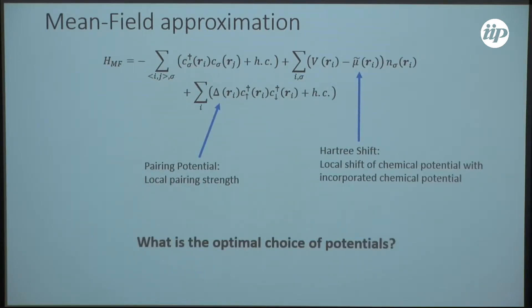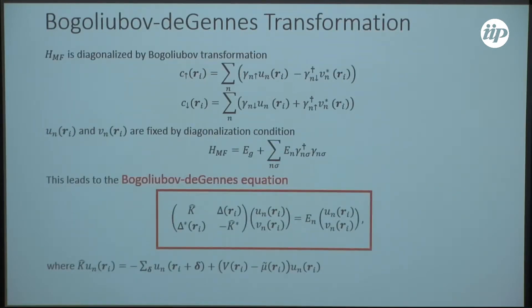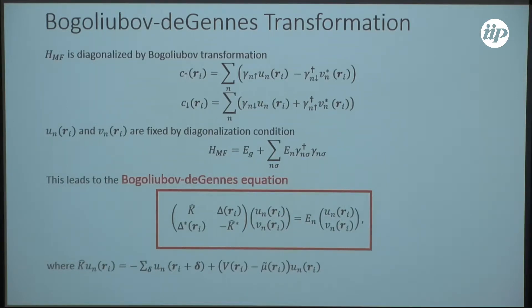Now, the question is how do we determine our potentials? For this, we first want to diagonalize our Hamiltonian for a given delta and µ-tilde. This can be done by the Bogoliubov-de Gennes transformation. We change to Bogoliubov operators, which are the superposition of electron and hole operators — so we need to determine the coefficients, the particle and hole wave functions. Demanding that we diagonalize our Hamiltonian, we arrive at the Bogoliubov-de Gennes equations. Here we have doubled our degrees of freedom — this is just a mathematical trick so we can stay in the first quantization picture. After diagonalization, we throw away our redundant degrees of freedom again.